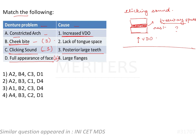That leaves us with constricted arch. A constricted arch occurs because the teeth are positioned too lingually, or the teeth size is not correct, or there is not enough space for the tongue — that is, lack of tongue space. So that gives us A-2. Final answers: A-2, B-3, C-1, D-4, which is option number 2.